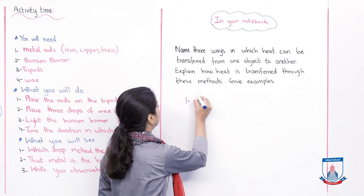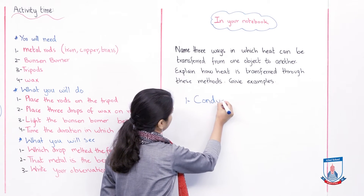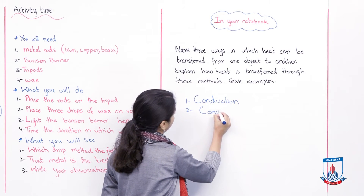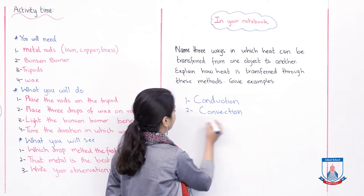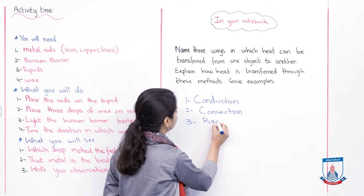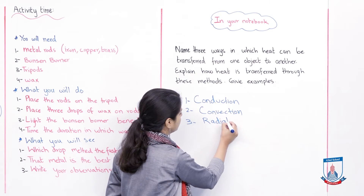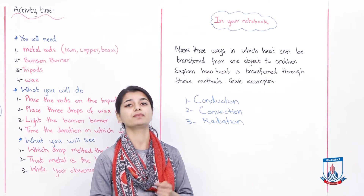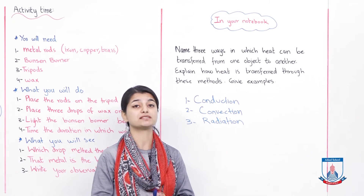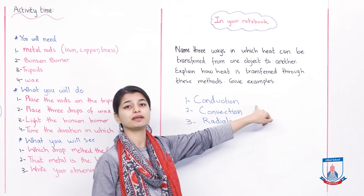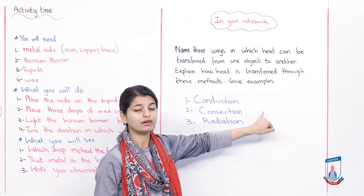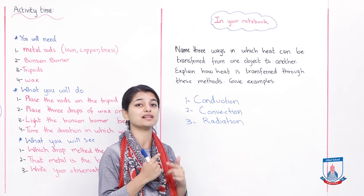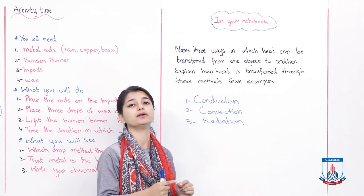Number one is conduction. Number two is convection. And number three is radiation. These are the three ways in which heat is transferred from one object to another. If you need to give an explanation, you can review my lecture or use your textbook. For conduction: one part of the object heats up, vibrations start there inside the solid, those vibrations pass to neighboring molecules, those also vibrate, and all the molecules heat up.